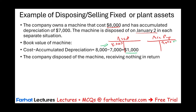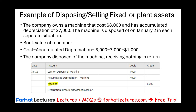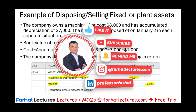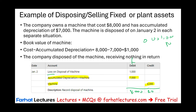Scenario 1: the company disposed of the machine and received nothing in return — they just threw it away. To record this, we credit the machine $8,000 and debit accumulated depreciation $7,000. We received zero versus a book value of $1,000, therefore we have a loss of $1,000 — we debit loss $1,000. Always make sure total debits of $8,000 equal total credits of $8,000.